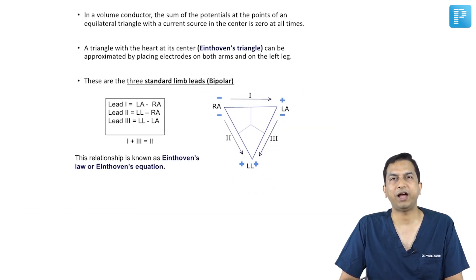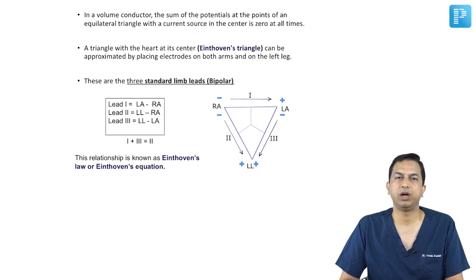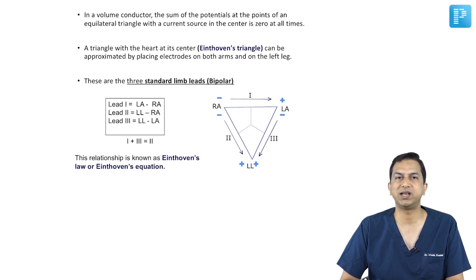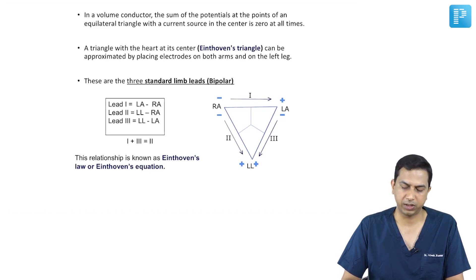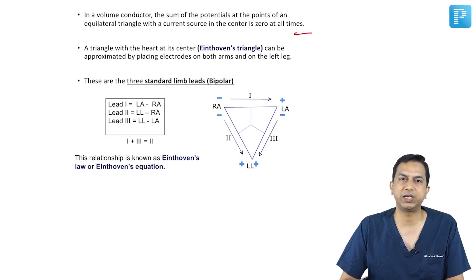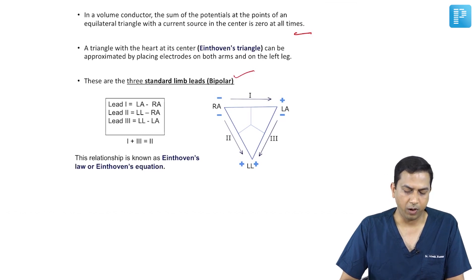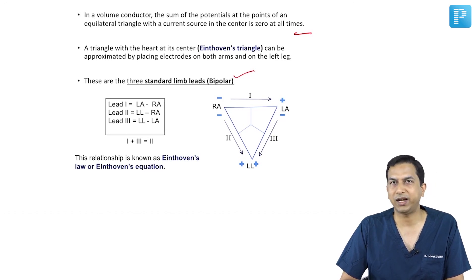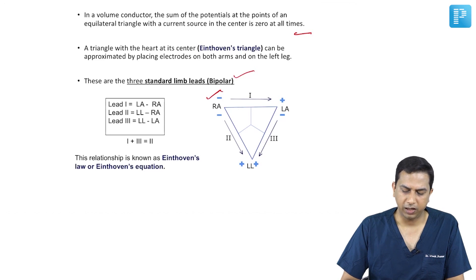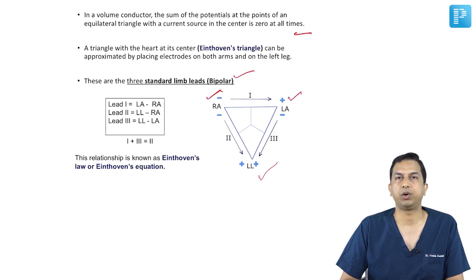The premise for a standardized electrocardiographic lead system is the physics law that in a volume conductor, the sum of potentials at the points of an equilateral triangle with a current source at the center is zero at all times. This led to the development of the initial three standard limb leads — the bipolar leads — by Einthoven, who depicted a virtual triangle with the heart at its center and electrodes placed on the right arm, left arm, and left leg, known as Einthoven's triangle.